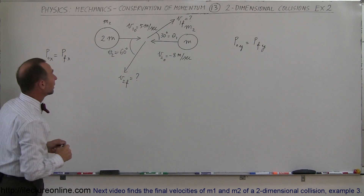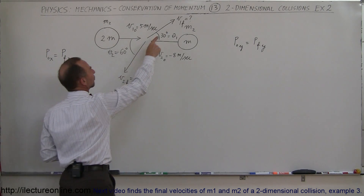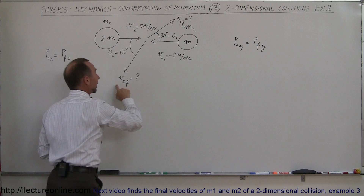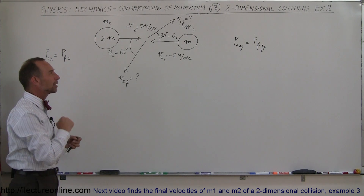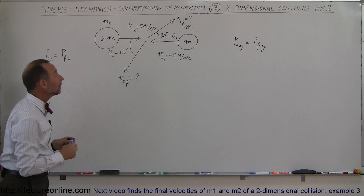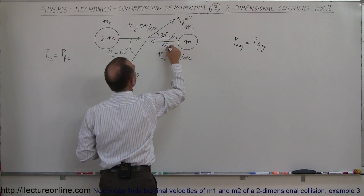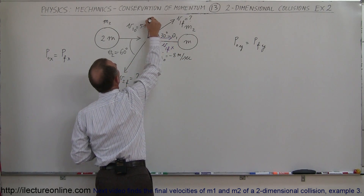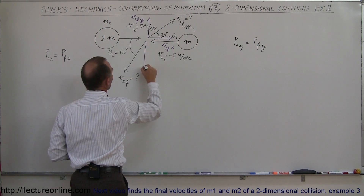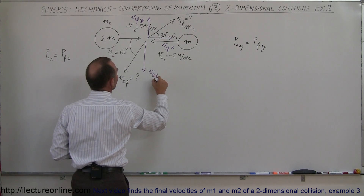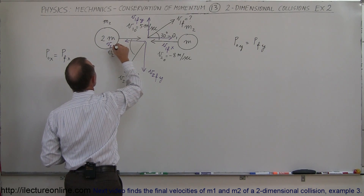Before we go on, we should recognize that our final velocities — v1 final and v2 final — are at an angle, so we should find the xy components of each of those final velocities first. V1 final has an x-direction component and a y-direction component. Likewise, v2 final has a y-direction component and an x-direction component.